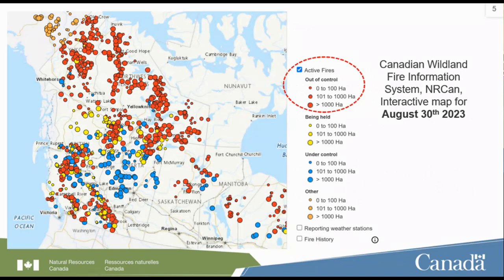Here is a snapshot taken from the Canadian Wildland Fire Information System by Intercan — an interactive map for the day August 30th, 2023, last year. You can see that we have out-of-control fires over a thousand hectares all across the north, all across the boreal forest.